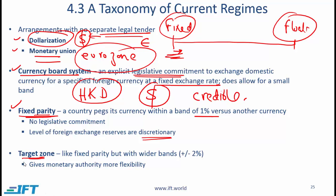Next is target zone, which is like fixed parity but with wider bands. With fixed parity we had 1% bands; with target zone we typically have a plus or minus 2% band, which gives the monetary authority a little more flexibility.